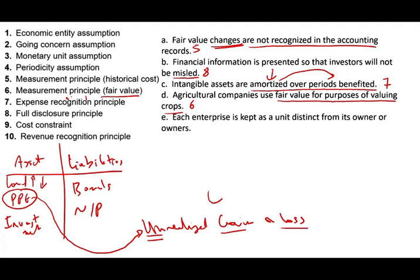Let's take a look at this scenario: each enterprise is kept as a unit distinct from its owner or owners. Hopefully this is one of the principles you learned in Financial Accounting 101. It means the business and the owners are two separate entities — we account for them separately. This is based on the economic entity principle or economic entity assumption: the business and the owners are two separate entities.